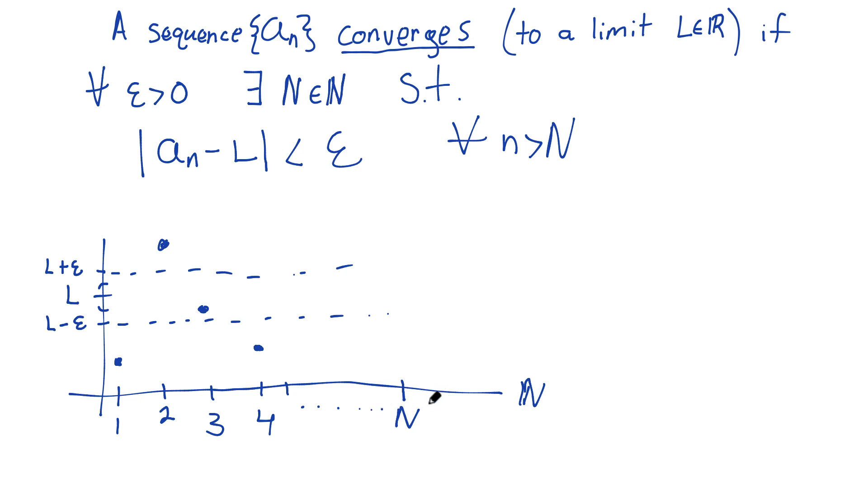Such that after this N, my sequence is always living inside this range. This is the definition of sequence convergence.